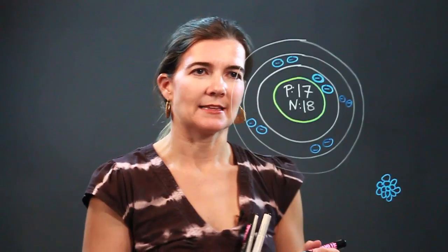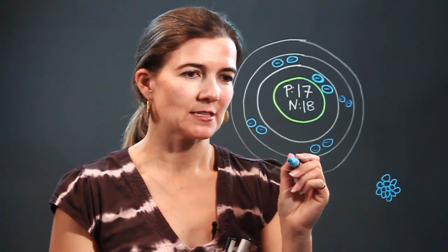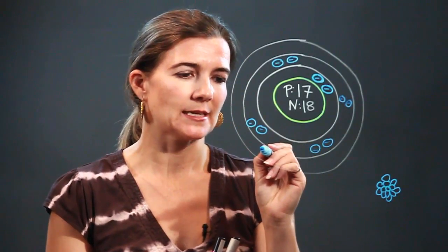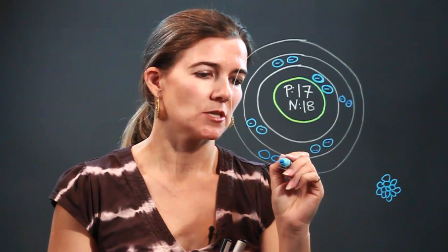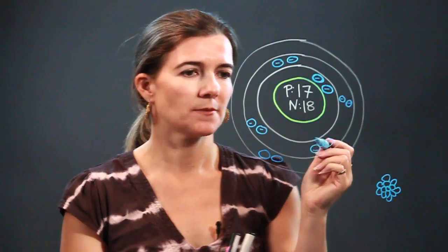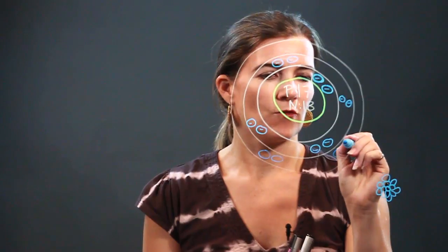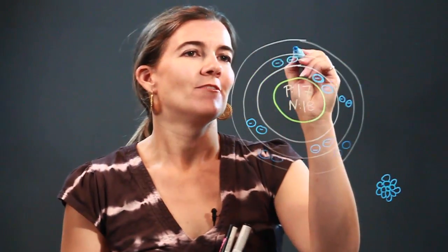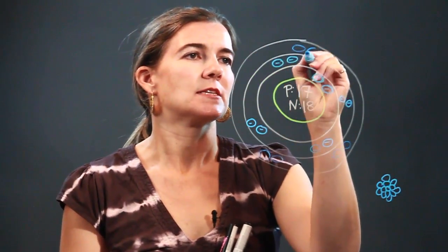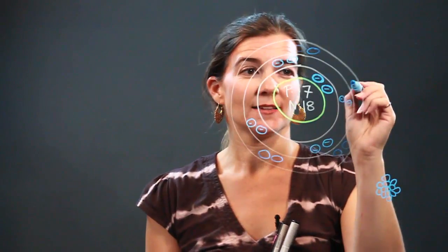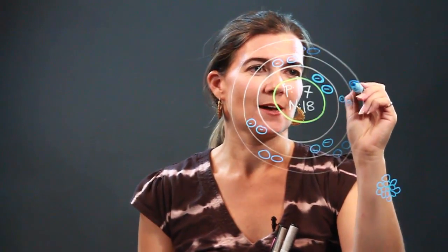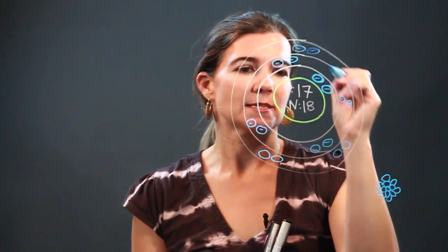All right, and in the last energy level you're going to have seven, so we are going to do something like this. One, two, again small circles, three, four, five, six, oh, and then only one, this poor guy's all by himself, but that makes it chlorine.